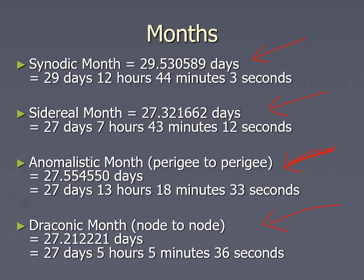Those eclipse seasons shift a little bit through the year because they're six and a half months apart, so they're not exactly the same time every year. Even the eclipse itself would look different because the moon is going to be a different size in the sky because of the anomalistic month. All these cycles go together to explain the motion of the moon and to explain eclipses.